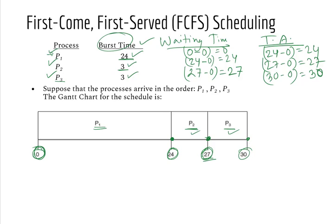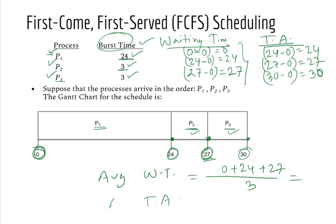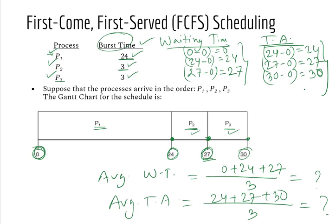If we calculate the average, average waiting time is 0 plus 24 plus 27 divided by 3, which equals 17. So we can see that if we follow the first come first serve FCFS algorithm, we can calculate the process's average waiting time and average turnaround time.